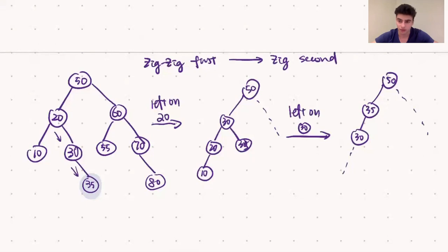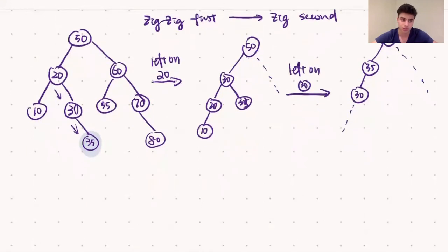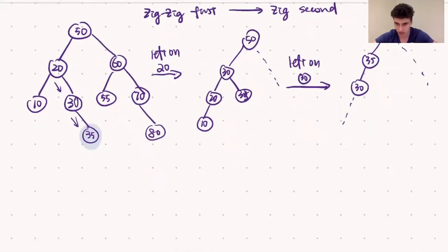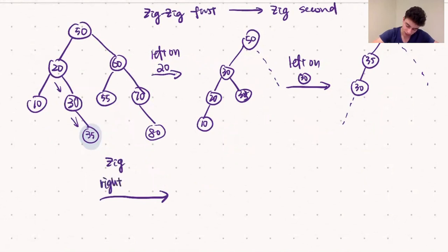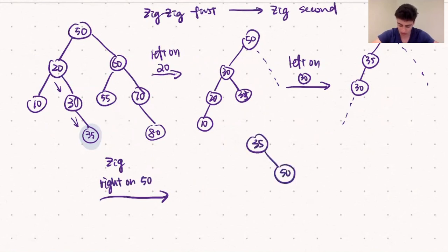Now that 35 is the root of the left subtree of 50, we perform the zig operation — a single right rotation at the root. Right rotating 50 gives us 35 at the root, 50 and its right subtree as the right child, and 30 and its left subtree as the left child.